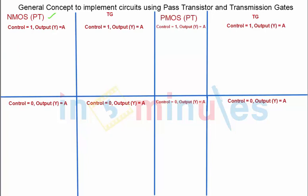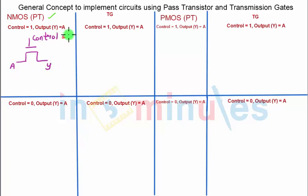This is straightforward: draw an NMOS transistor and give its gate the control signal. This is your input A and this is your output Y. So when my control signal is equal to 1, this will be a closed switch and my A input will propagate to the output. So Y is equal to A — just draw an NMOS transistor and give its gate terminal the control signal.